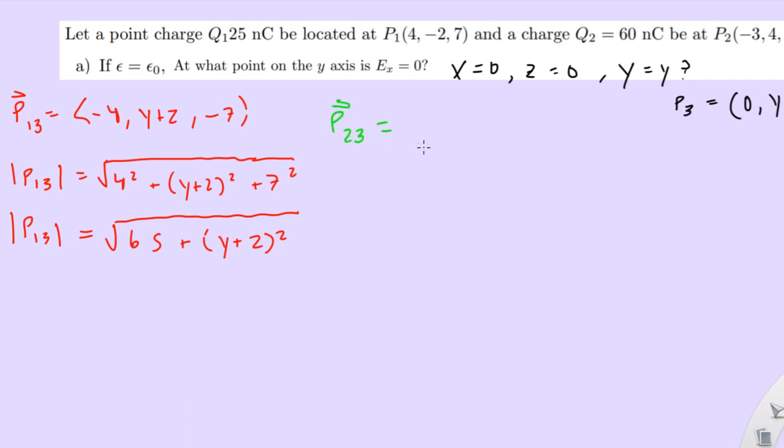And then, now let's find our r23 point. Same exact method. 0 minus negative 3 is going to be negative 3. y minus 4 is just y minus 4. And then, 0 minus negative 2 is 2. And again, we find the magnitude. So, 3 squared is going to be 9. 2 squared is going to be 4. 9 plus 4 is 13. And then, again, we can't do anything with this (y minus 4) squared value.